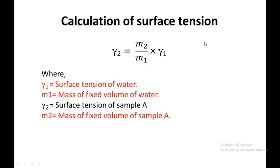For the calculation of surface tension: the surface tension of liquid sample A equals M2 divided by M1, multiplied by the surface tension of water, where M1 is the mass of a fixed volume of water and M2 is the mass of the fixed volume of sample A. The surface tension of water is a fixed value of 72.9 dynes per centimeter at room temperature at 30 degrees Celsius. By putting the values of mass of water, mass of sample, and surface tension of water, you can calculate the surface tension of the sample using the drop weight technique.